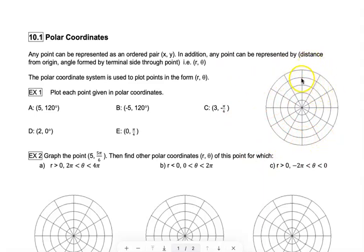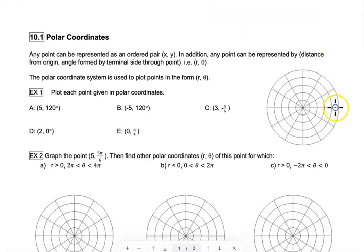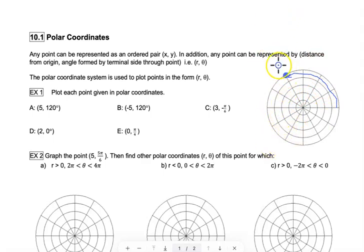At 120 degrees — this grid doesn't have the 45s like the unit circle, but you can see where 90 is, and each 90 is divided into thirds, so each radius line is 30 degrees from the last. 120 degrees would be the terminal side going over to here, so the point 5, 120 would be right here on the fifth circle out, 120 degrees from the positive x-axis. We label it with its coordinates 5, 120 degrees. This is point A.